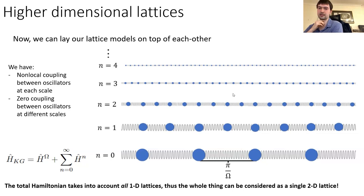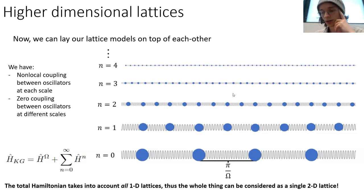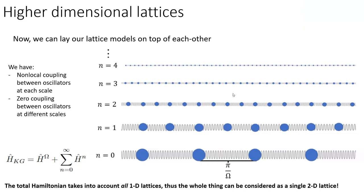On the question of whether one needs to worry about artifacts like the Gibbs phenomenon: something similar to the Gibbs phenomenon does appear — it's the oscillations you see in, for example, the correlation functions when you put in a UV cutoff. You get additional oscillations between your sampling points, so you could argue that's a sort of Gibbs phenomenon.